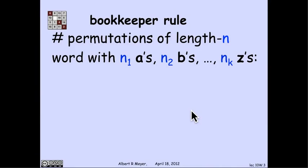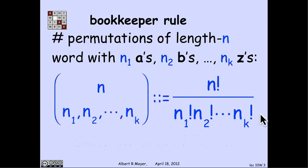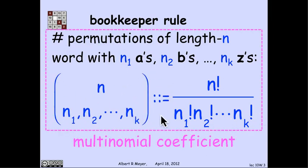More generally, by the same reasoning, if I look at a sequence of n letters of which n₁ are a's and n₂ are b's through nₖ are z's, then the number of permutations of those letters with the repeated a's, b's, and z's is n factorial divided by n₁ factorial times n₂ factorial through nₖ factorial.